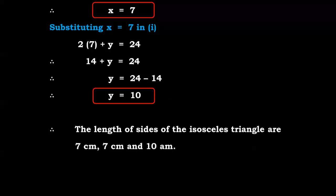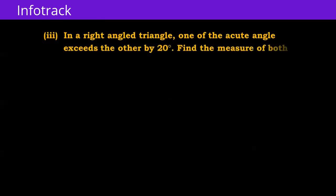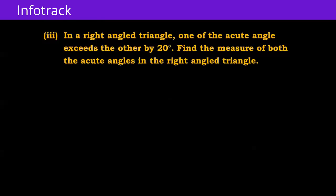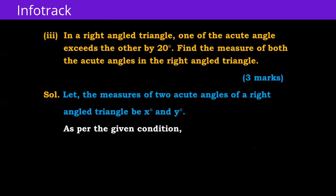The length of the sides of the isosceles triangle are 7 cm, 7 cm, and 10 cm. Next problem: in a right angle triangle, one of the acute angles exceeds the other by 20 degrees. Find the measure of both acute angles. Let the measures of the two acute angles be x and y degrees. As per the first condition, x = y + 20, so x - y = 20, equation 1.